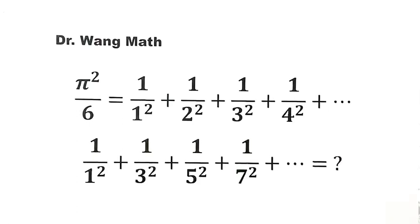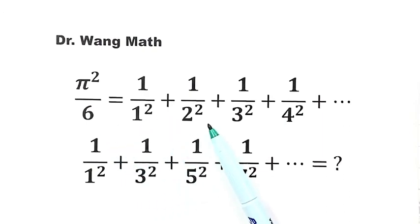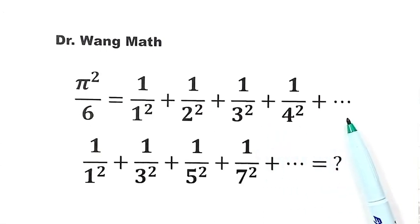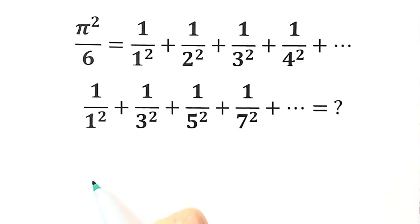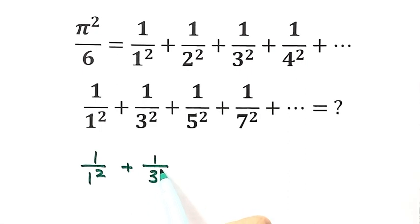In this video, we want to solve this question. Given π²/6 equals 1/1² + 1/2² + 1/3² and so on as an infinite sum, then what is this infinite sum: 1/1² + 1/3² + 1/5² and so on — the sum over odd positive integers only?